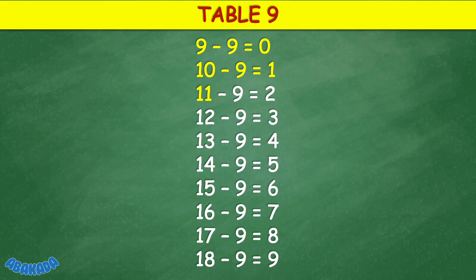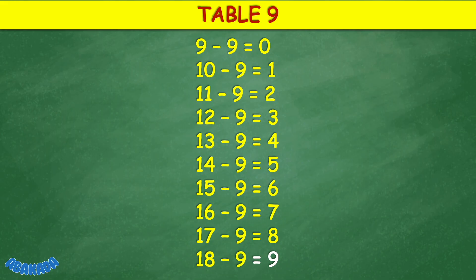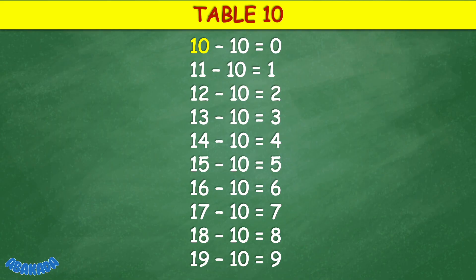Table 9: 9 minus 9 equals 9, 10 minus 9 equals 9, 11 minus 9 equals 2, 12 minus 9 equals 3, 13 minus 9 equals 4, 14 minus 9 equals 9, 14 minus 9 equals 7, 17 minus 9 equals 8, 17 minus 9 equals 9, 11 minus 9 equals 8, 16 minus 9 equals 9.